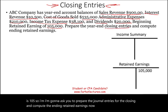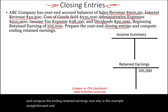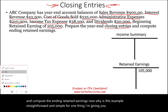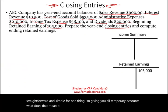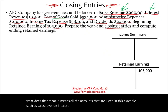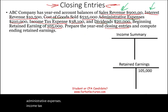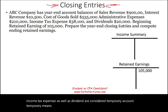This example is straightforward because I'm giving you all temporary accounts. All the accounts listed — sales revenue, interest revenue, cost of goods sold, administrative expenses, income tax expenses, and dividends — are considered temporary accounts. Temporary means we close them at the end of the accounting period.